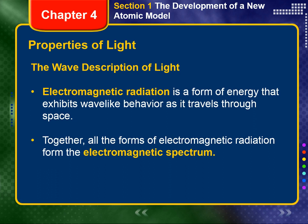The Wave Description of Light. Visible light is a kind of electromagnetic radiation, which is a form of energy that exhibits wave-like behavior as it travels through space. Other kinds of electromagnetic radiation include X-rays, ultraviolet and infrared light, microwaves, and radio waves. Together, all forms of electromagnetic radiation form the electromagnetic spectrum.